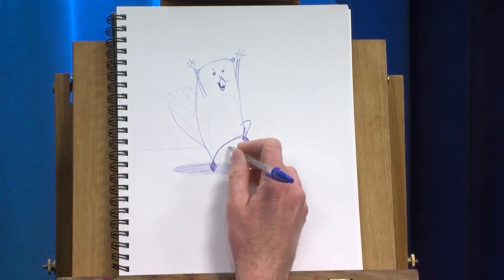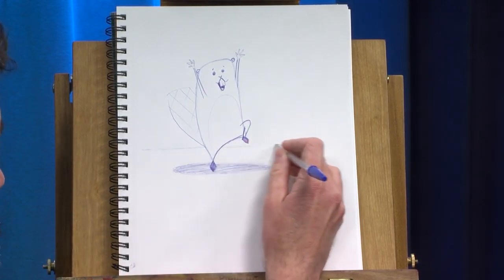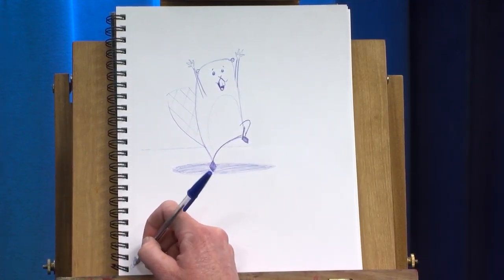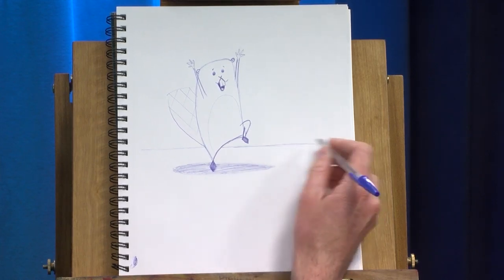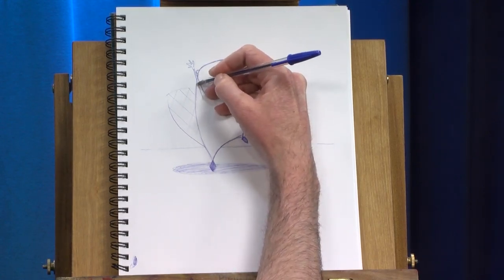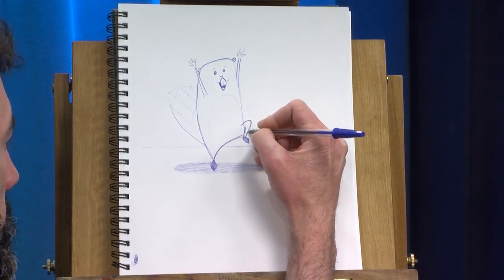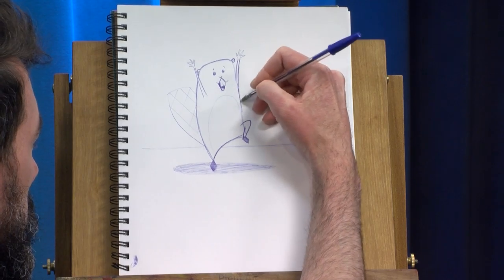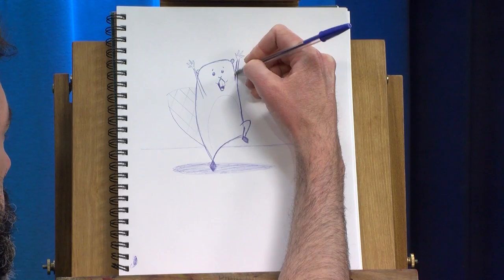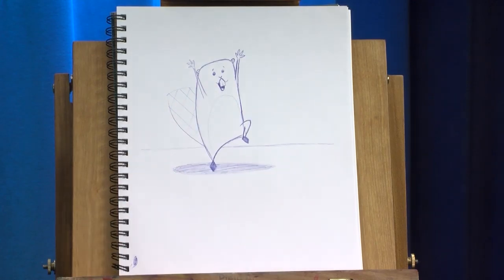And we're going to add in a line behind him for the horizon line. This pen does not like to work at this angle. There we go. And there is our beaver celebrating the return of spring. If you want, you can give him a caption saying something funny. I don't want to steer your doodle too much. You finish yours off however you'd like.